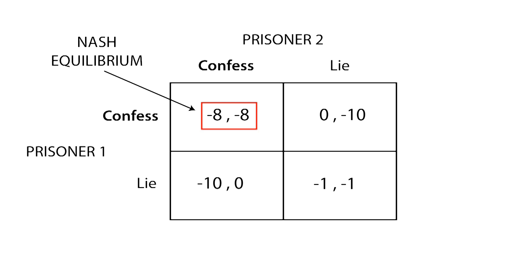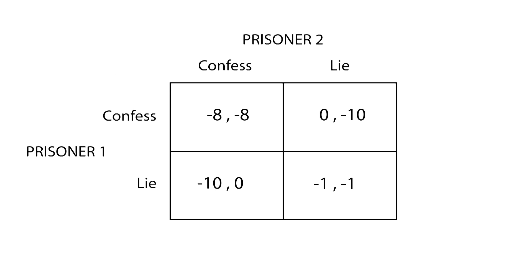Therefore, to get to the Nash equilibrium we can also use another approach, known as elimination of dominated strategies. Prisoner 1 has to build a belief about what choice prisoner 2 is going to make in order to choose the best strategy. It can be easily seen that prisoner 2 will choose to confess, since he will be better off — lie is therefore the dominated strategy, which we eliminate.